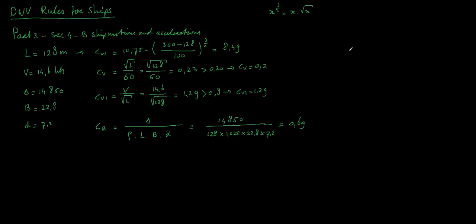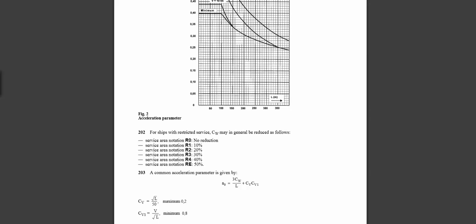From all these we can calculate a coefficient called a0. Let's go back to the DNV manual. It says here a0 is block coefficient divided by L. Let's work that one out.